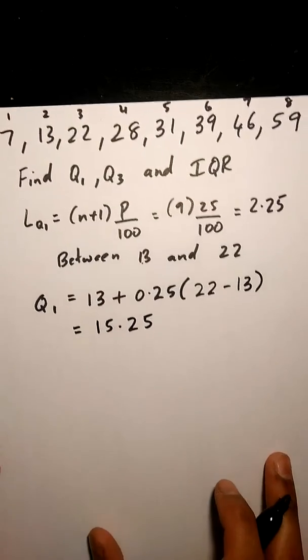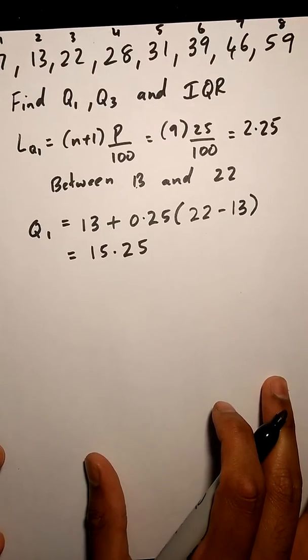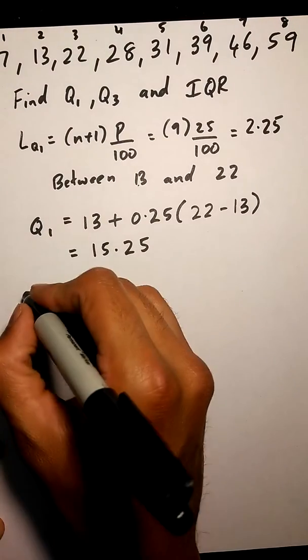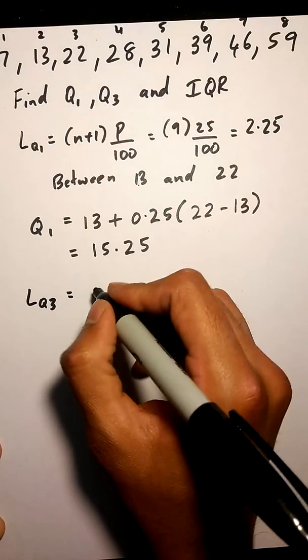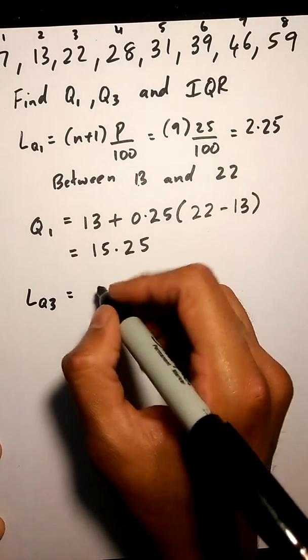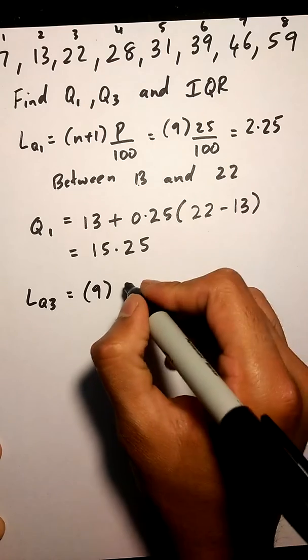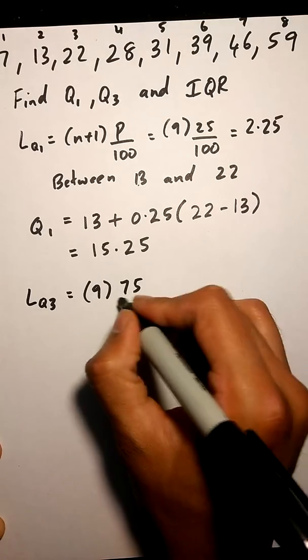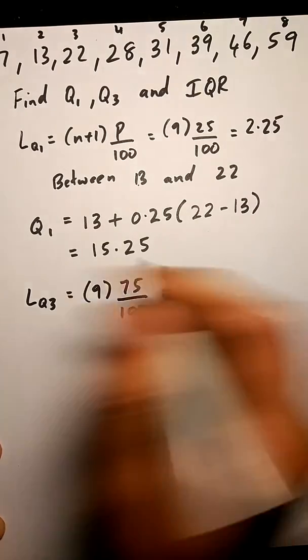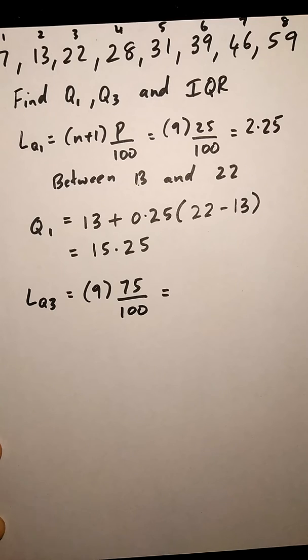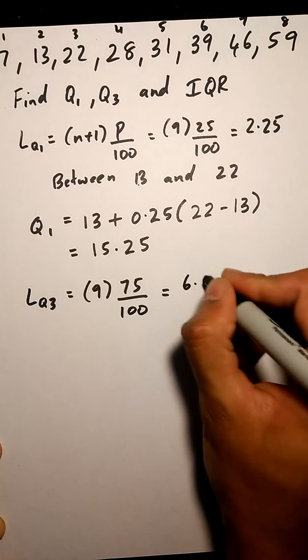And it's very similar for our Q3 as well. Our index of Q3 is basically again 8 plus 1, which is 9, and our p is now 75 for our Q3, which is basically 6.75.